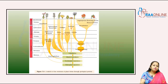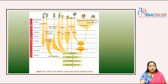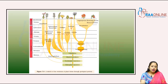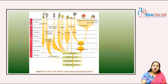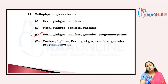After that, progymnosperms form seed ferns, then the cycads and the dicotyledonous plants. In that manner, the most appropriate correct answer is C.